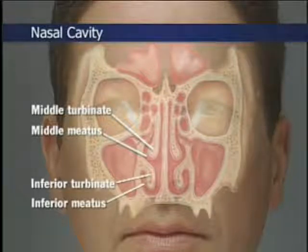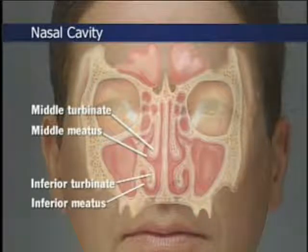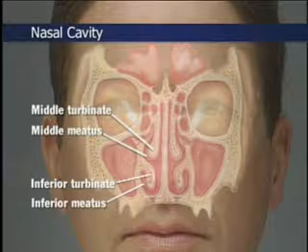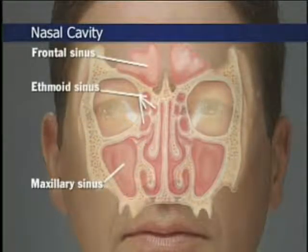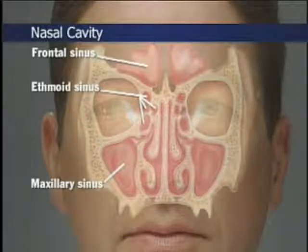Below each turbinate is a groove or meatus, each named according to the turbinate above it. Draining into the inferior meatus is the nasolacrimal duct; into the middle meatus drain most of the paranasal sinuses, though their openings are not usually visible. The paranasal sinuses are air-filled cavities located within the bones of the skull and lined with mucous membrane.